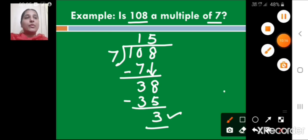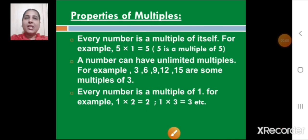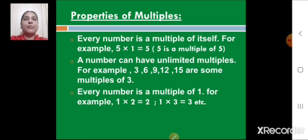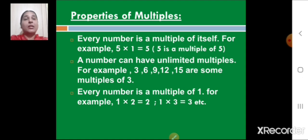Let us now discuss some properties of multiples. The first property is: every number is a multiple of itself. For example, 5 × 1 = 5, which shows that 5 is a multiple of 5. When you multiply any number by 1, you get that number itself, so every number is a multiple of itself.